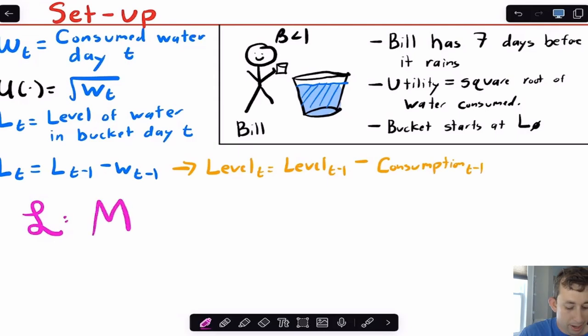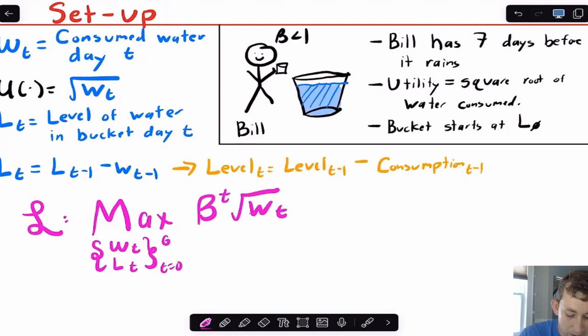Now let's just write the Lagrangian. I'm going to say this is the maximum, where I get to choose how much water I take out today. I sort of also get to choose how much water is in the bucket today based on my choice yesterday, that's sort of like a state variable. This is going to go from zero to six. The reason is because we go from zero days from today, which is day one, all the way until six days from today, which is day seven. On each day, I'm going to have beta to the T times my utility function, which is the square root of WT.